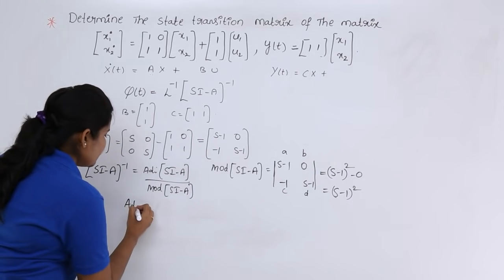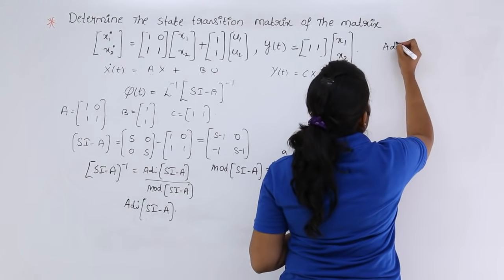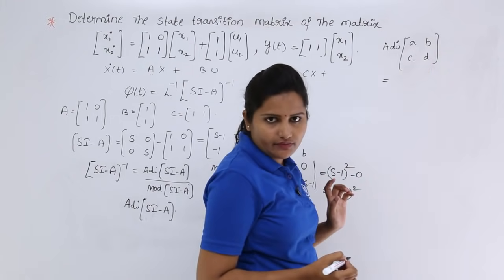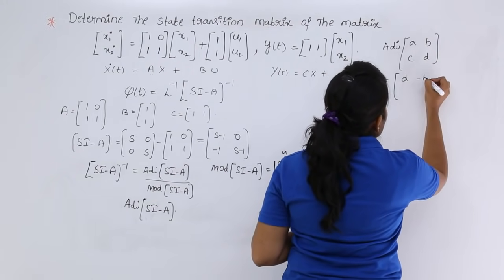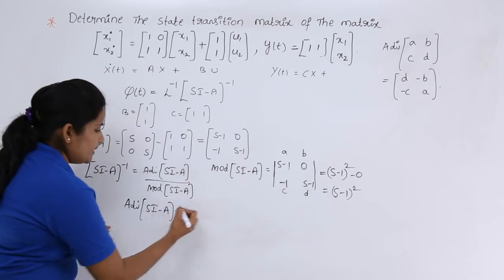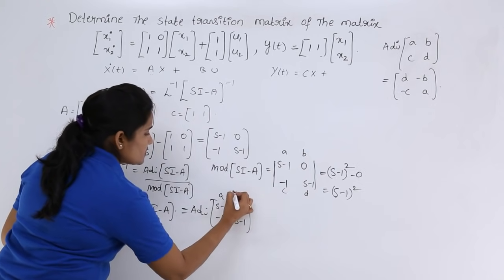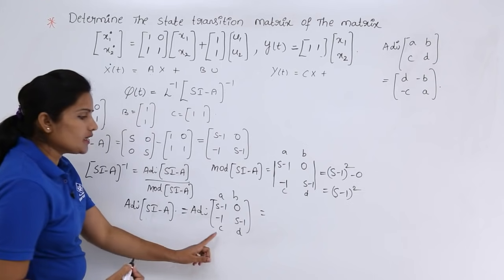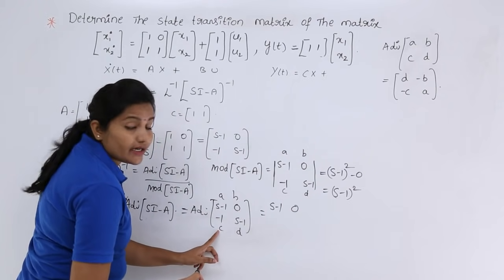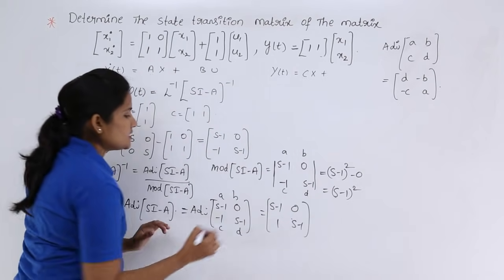Now we calculate the adjoint of (sI - A). For a 2×2 matrix [A, B; C, D], the adjoint is [D, -B; -C, A]. Applying this to sI - A = [s-1, 0; -1, s-1]: D = s-1, -B = 0, -C = +1, A = s-1. So the adjoint of (sI - A) = [s-1, 0; 1, s-1].